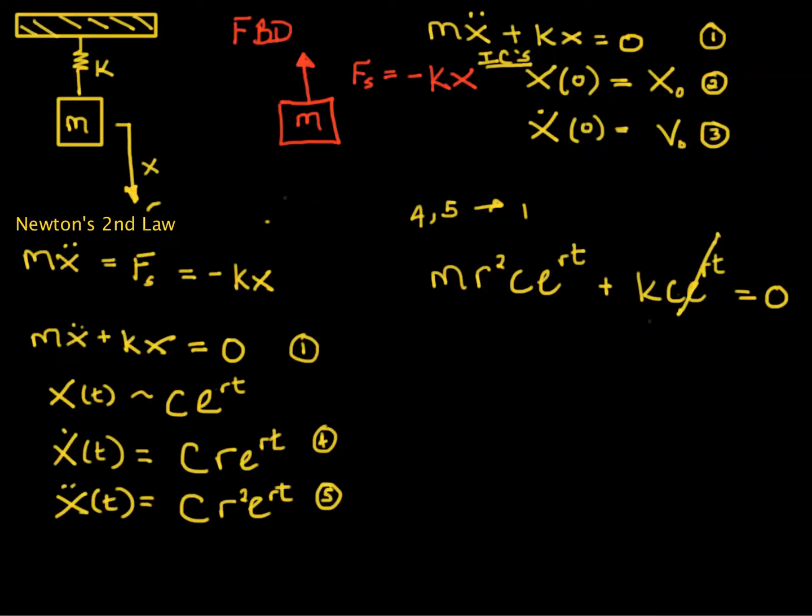We can cancel C e to the rt, since we know that those are non-zero, because if C were zero, we would just have a trivial solution. And what we end up with is m r squared plus k equals zero. And let's remember that m and k are both greater than zero. They're both positive real numbers.